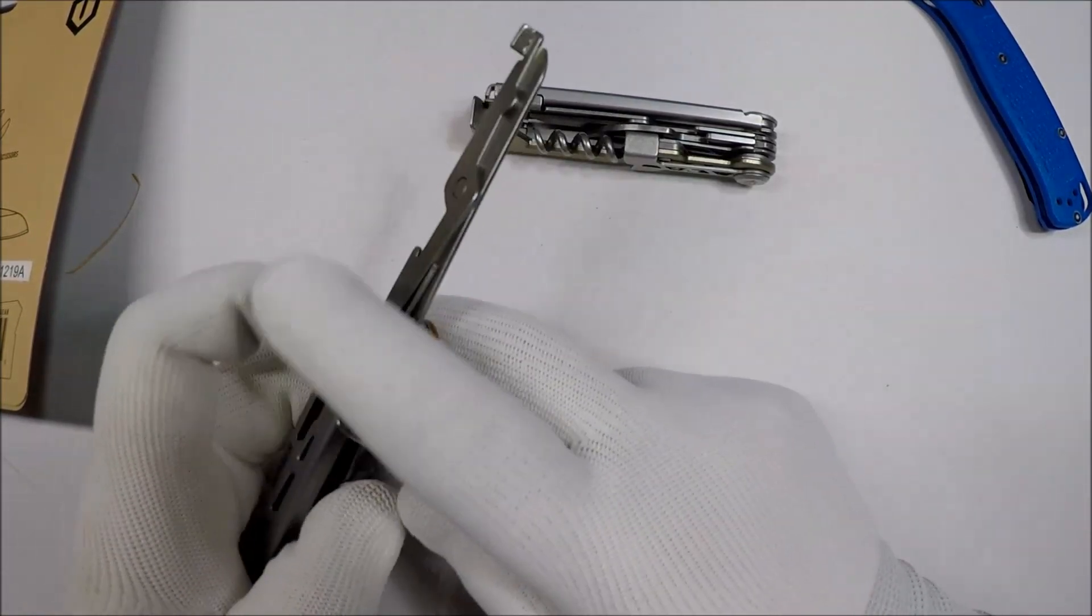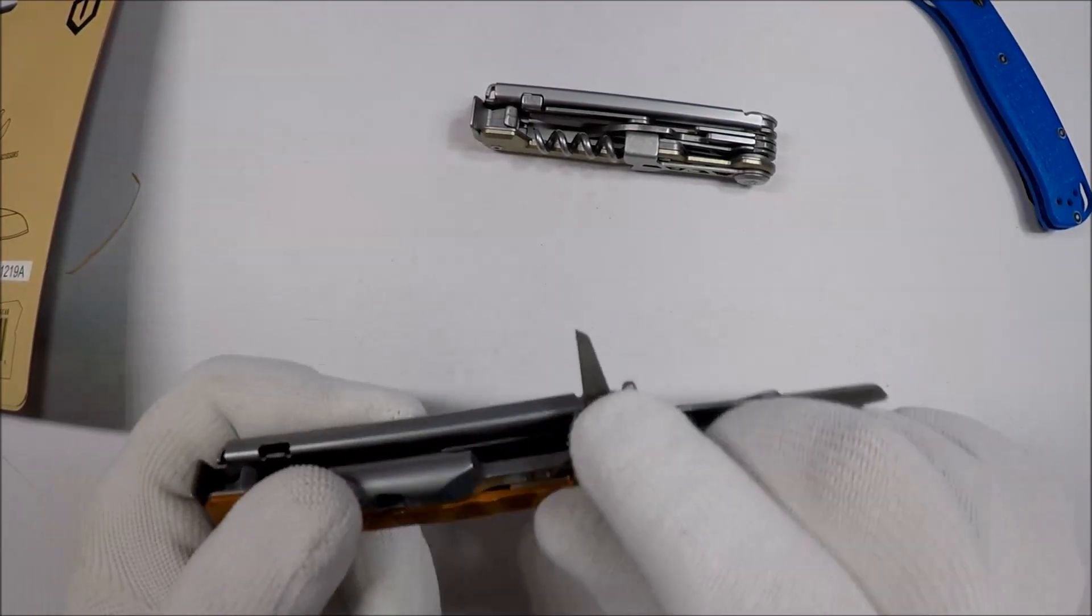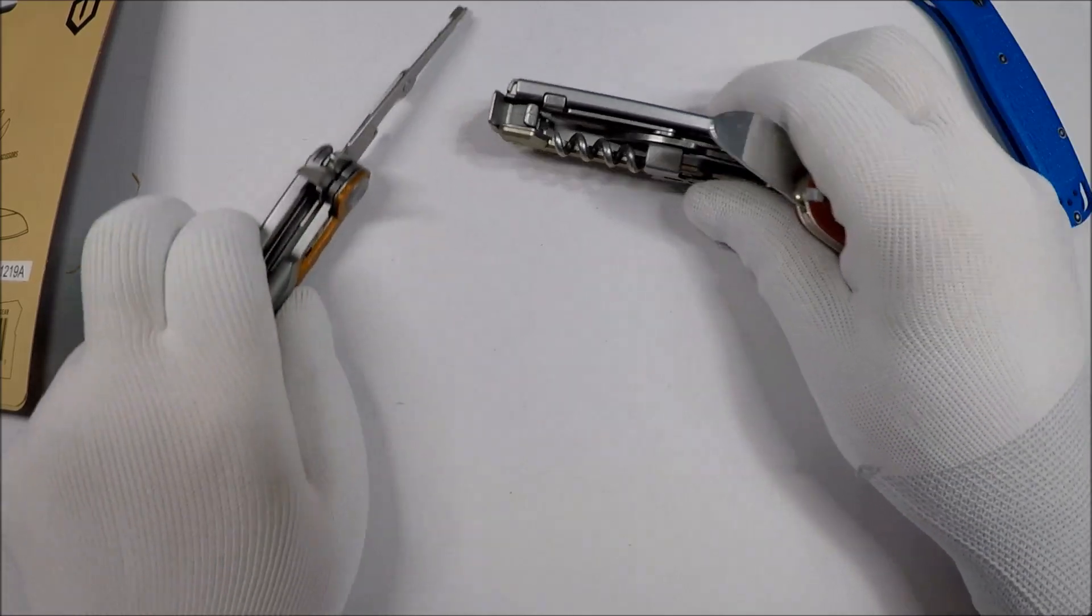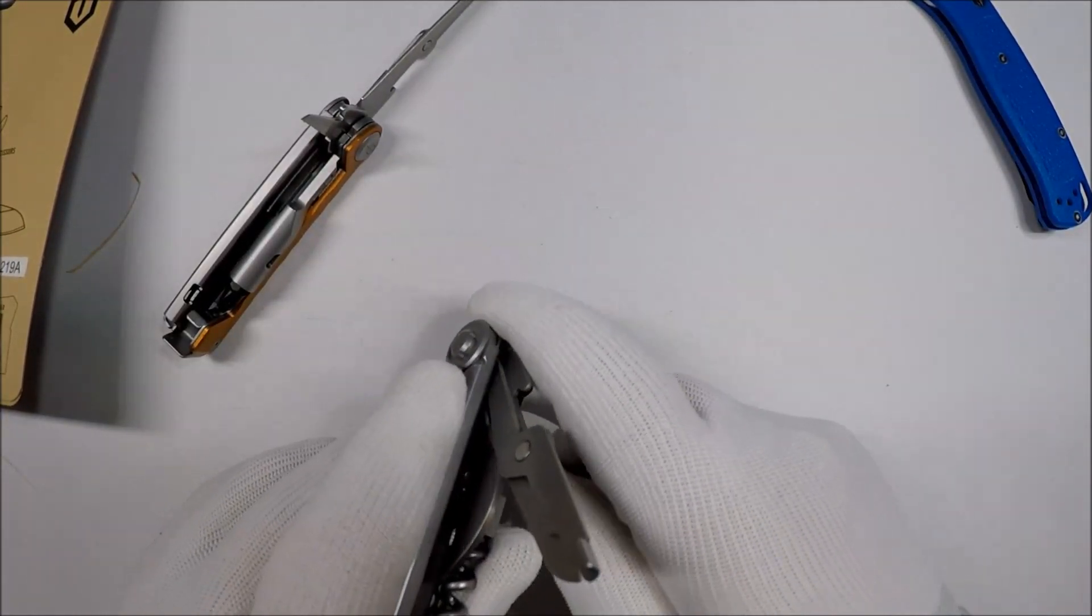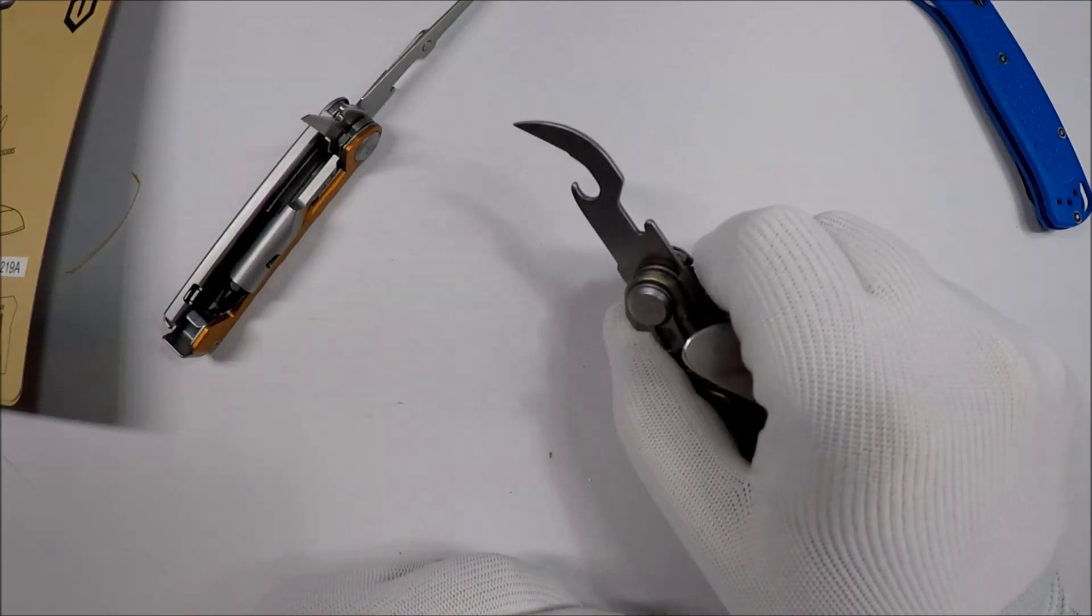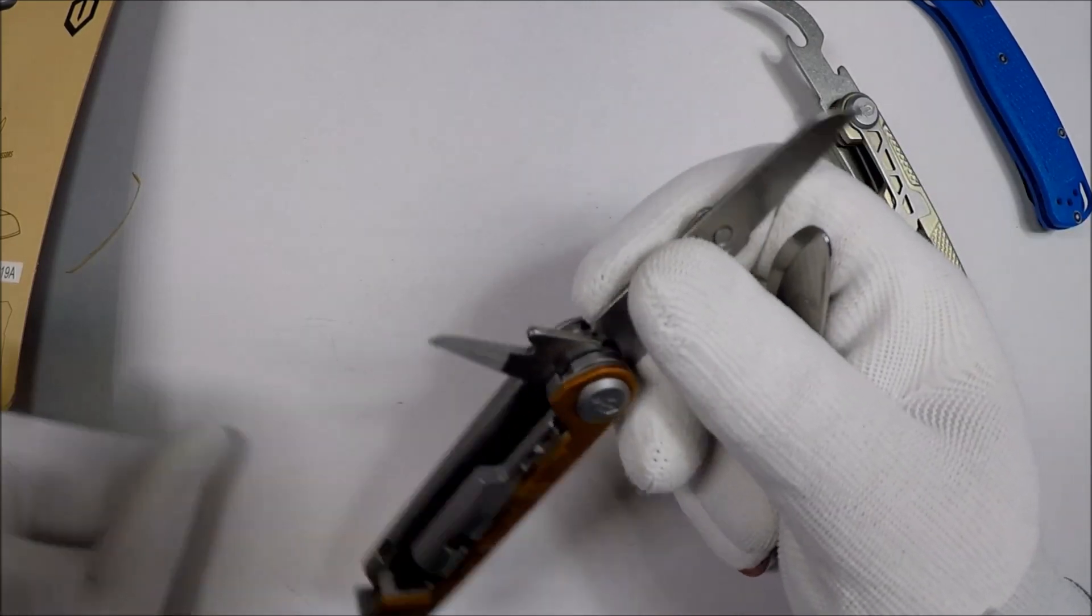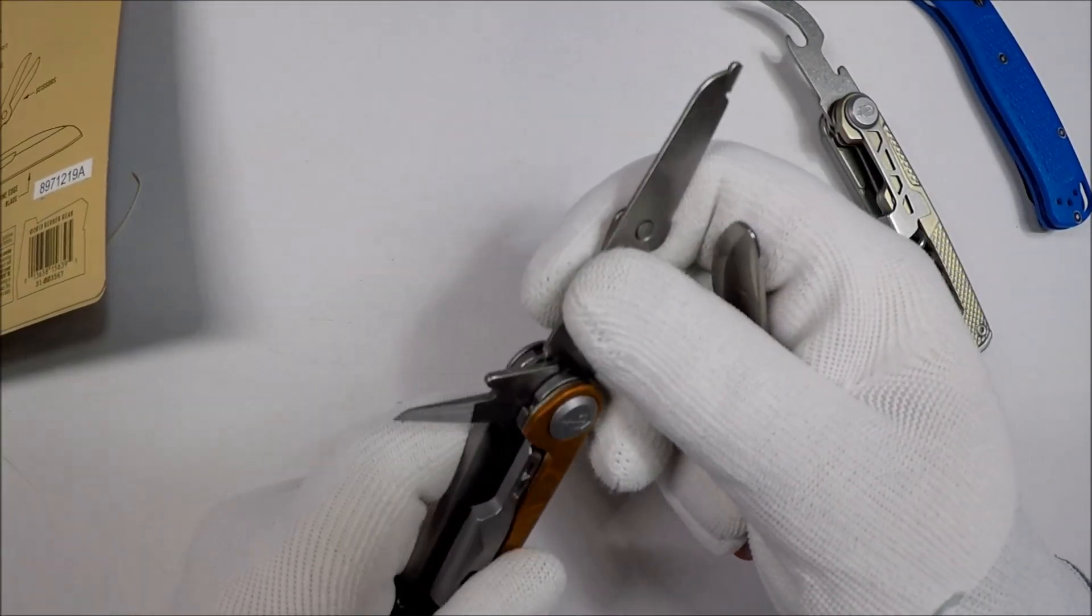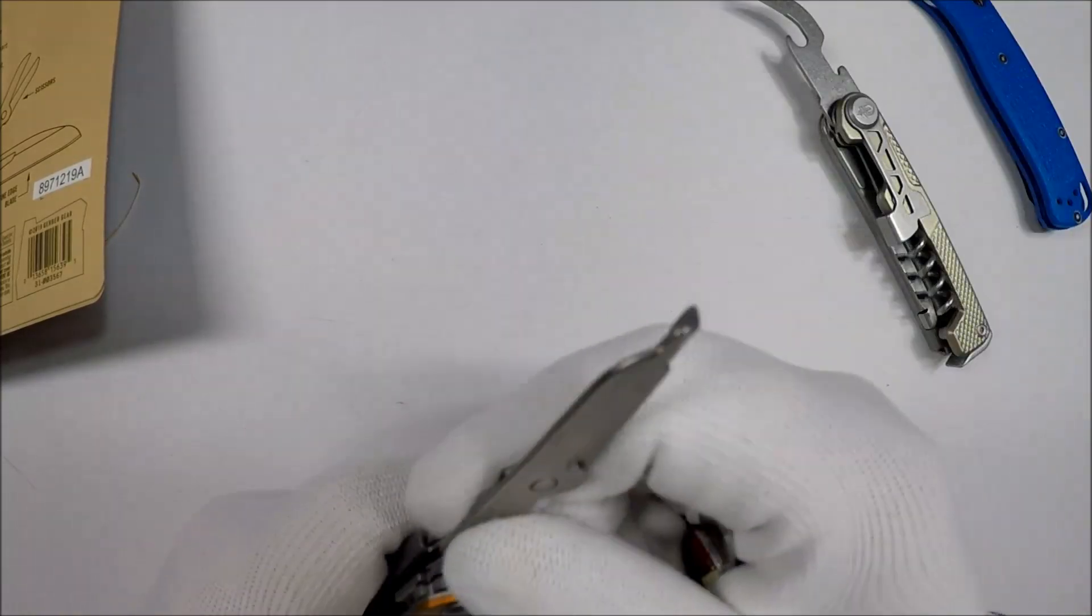Now you got the awl. This is the awl. And the other one had a can opener. So the cork has a can opener in there, and the Armbar has the awl, which is okay, I guess. These scissors are just unacceptable though.